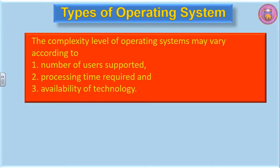The complexity level of operating systems may vary according to: first, the number of users supported; second, the processing time required; and third, availability of technology. On the basis of these three factors we can determine the complexity level of operating systems.